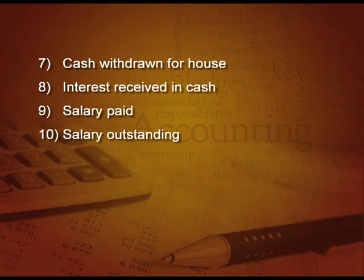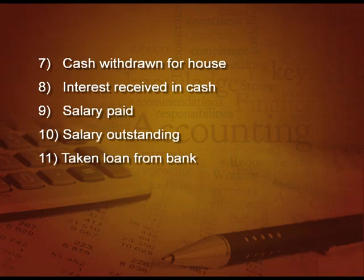Next: salary outstanding. We have not paid it — it is outstanding — but it is an expense. So salary will be debited, but now instead of cash, salary outstanding will be credited. The entry is: salary account debit, To salary outstanding. Next: taken loan from bank. What is coming in? Bank account. And what is the liability part? Loan. So the entry is: bank account debit, To bank loan.